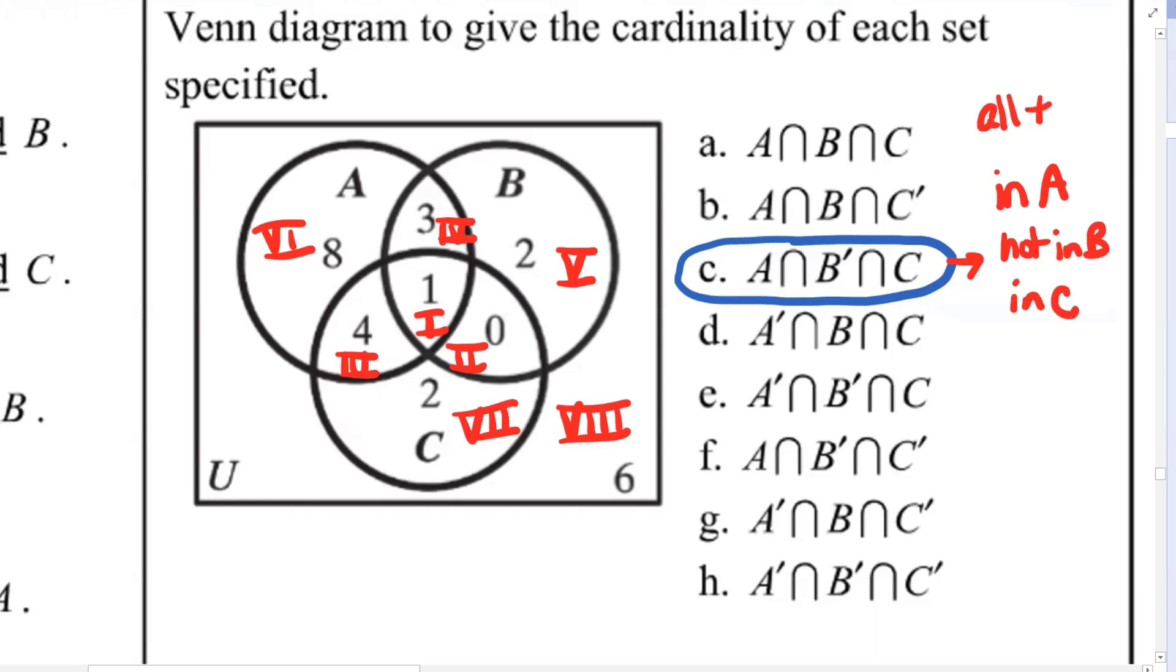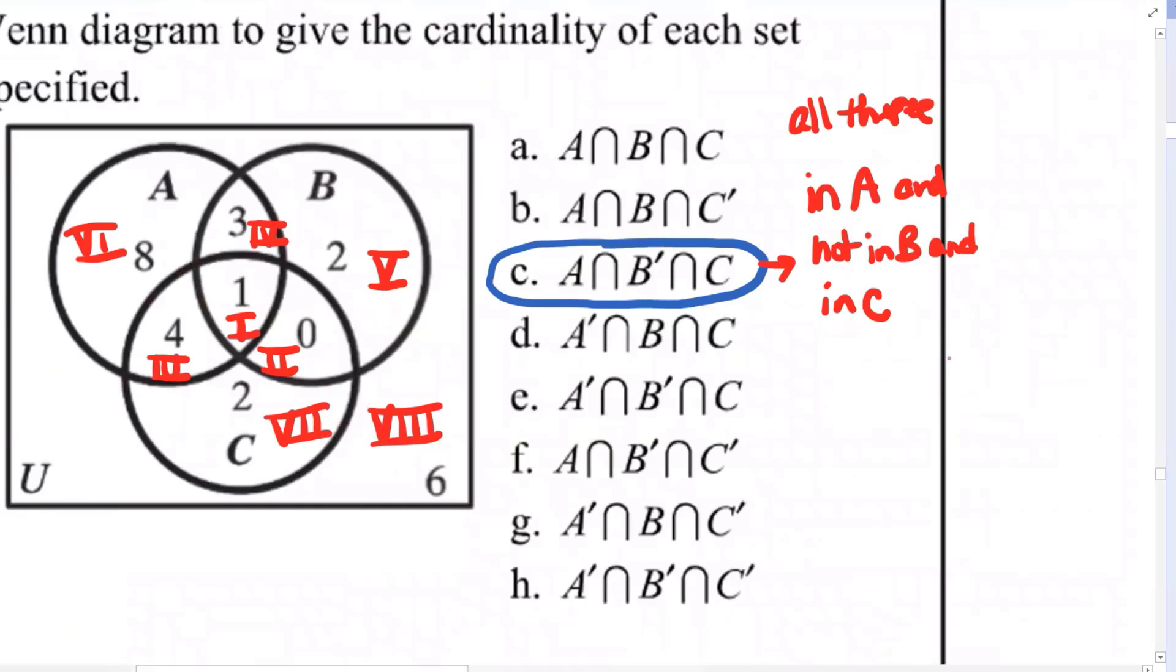All three characteristics, because it's intersection, it means and, right? In A and not in B and in C. So we need all three of these characteristics to be the case.